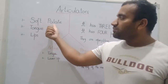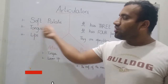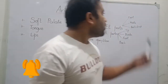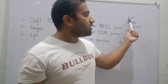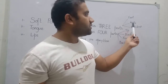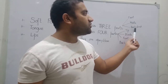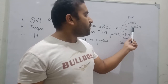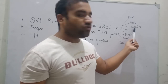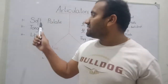We have the soft palate as one articulator. The soft palate has three parts: one is the front of the palate, which is under your front teeth; the second is the middle of the palate; and the third is the back of the palate, which is parallel to the lower position of your tongue. These are the three parts of the soft palate.